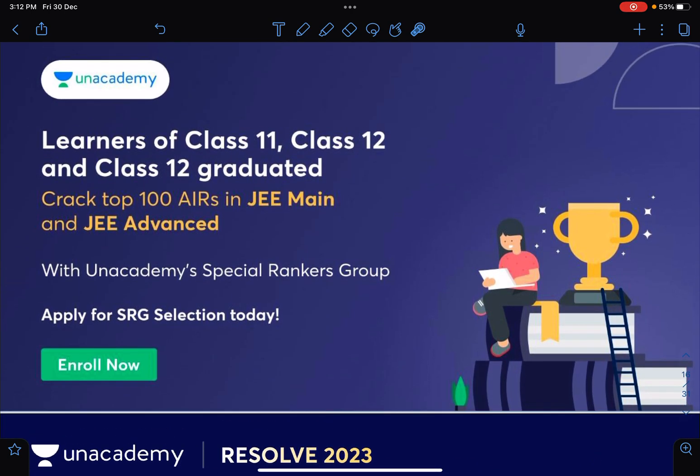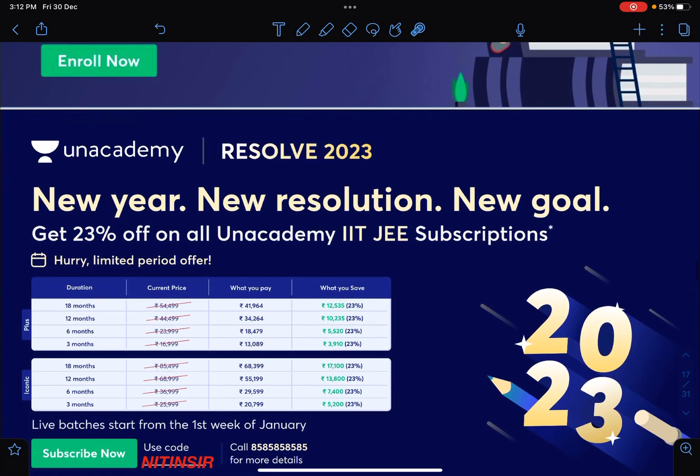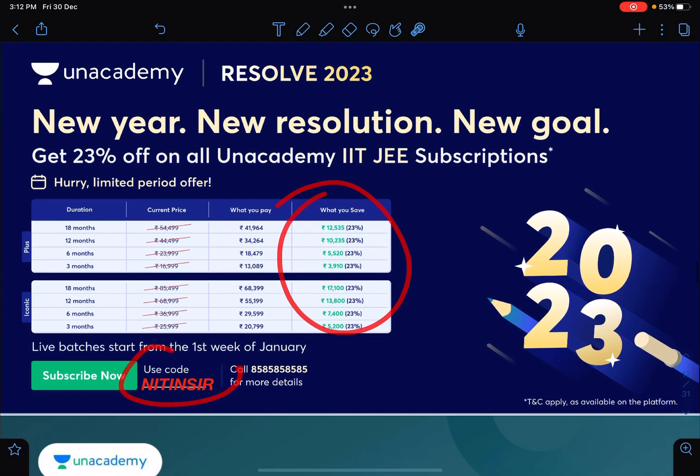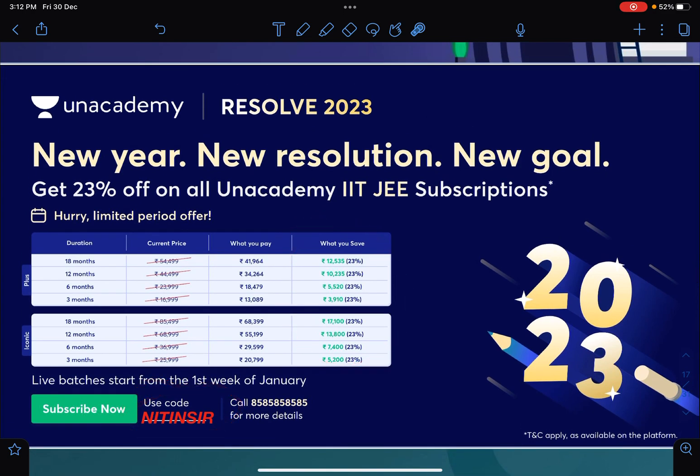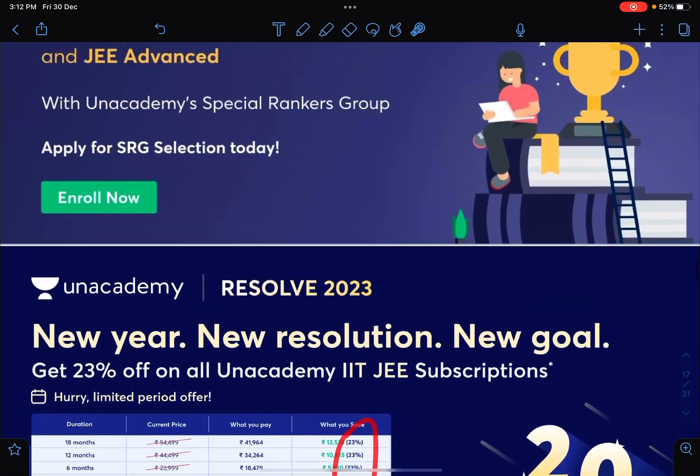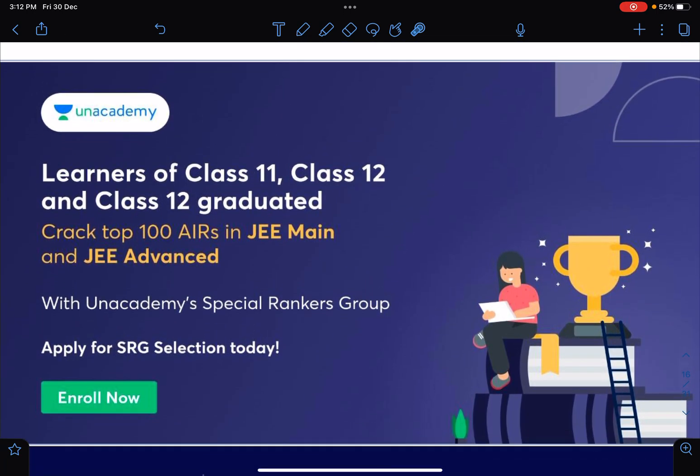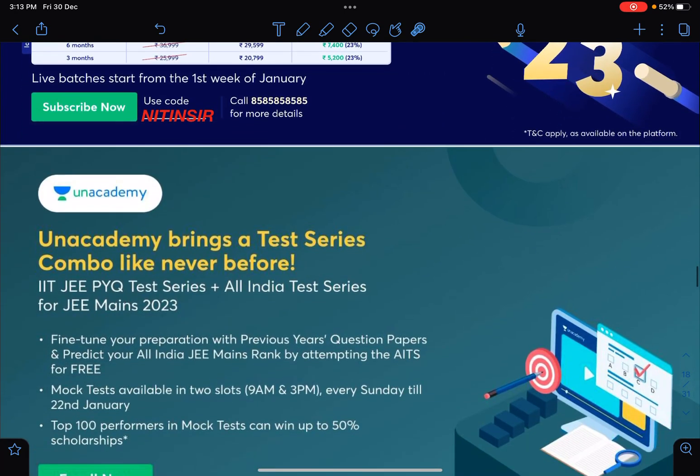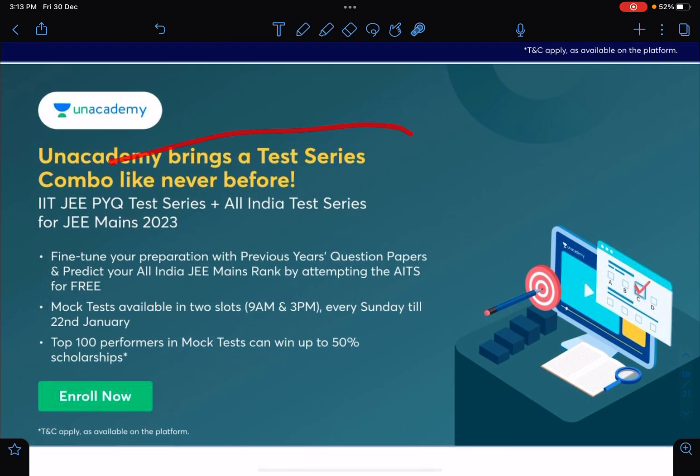If you want to connect with me on Unacademy, there are some discounts going on. You can use my code Nitin sir - it's a good discount for New Year resolution. If you want to go for rank improvement program under special rankers group, you can definitely go through some very nice problems and nearly all teachers of Unacademy will be taking care of this. Unacademy's test series is combo like PYQ test series and All India test series for JEE Mains and Advanced, so you can enroll in this.